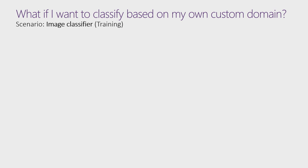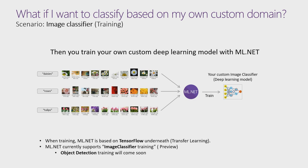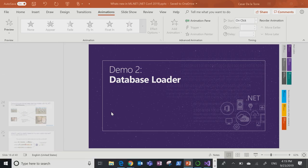The key question is: what if you want to classify images based on your custom domain — your own images and your own labels? For that, you need to train your own model. What if I don't want to just say 'this is a flower' but be more precise and say 'this is a rose' or 'this is a tulip'? For that, you can train a model in ML.NET using Transfer Learning, deriving from those pre-trained models and then training on your own images.